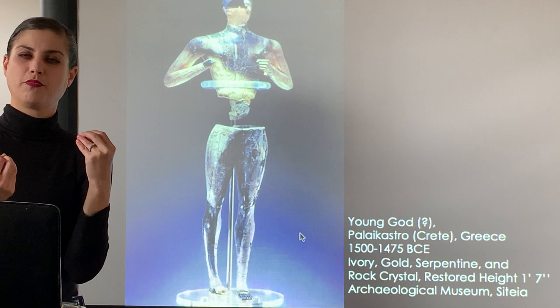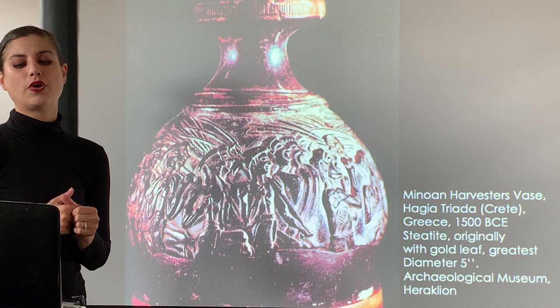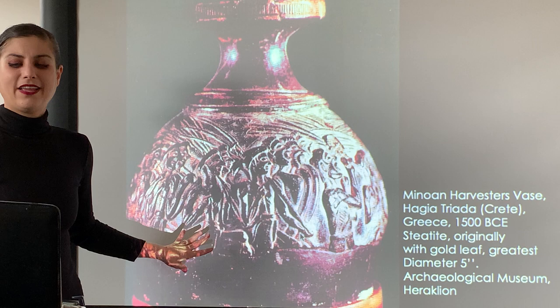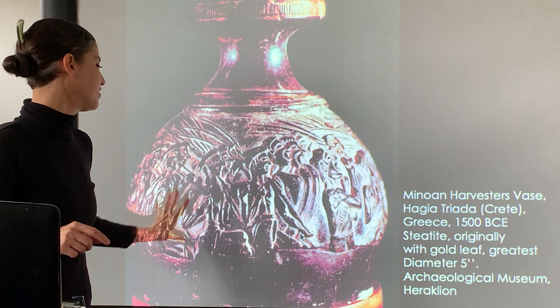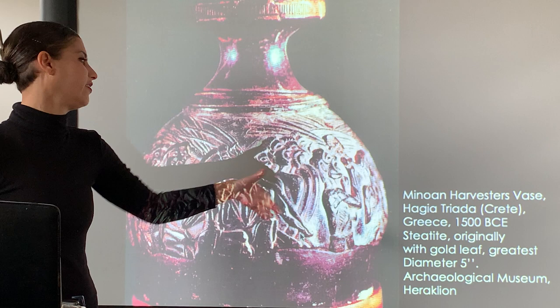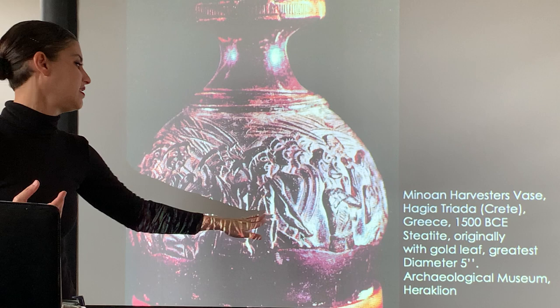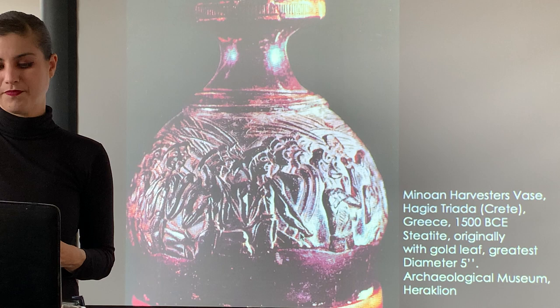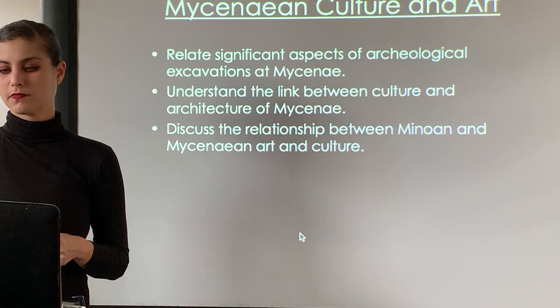The harvester's vase showcases the importance of the harvest season for the earliest Greek people in the ancient Aegean. You can see workers having harvested the grain, bringing it to town. A man has a rattle and they're singing after working in the field all day - you can see their muscles. There's a real liveliness showcasing the importance of the harvest.